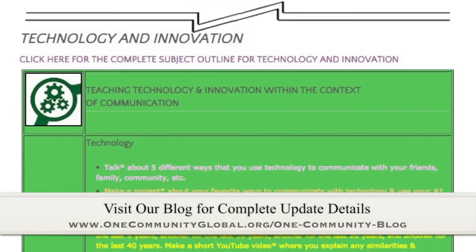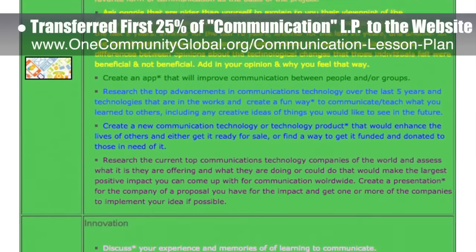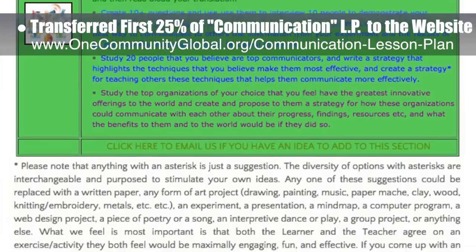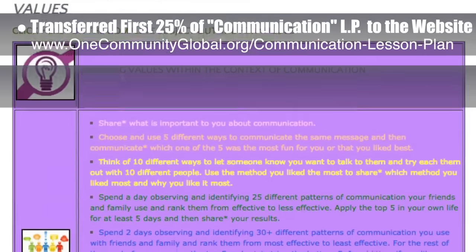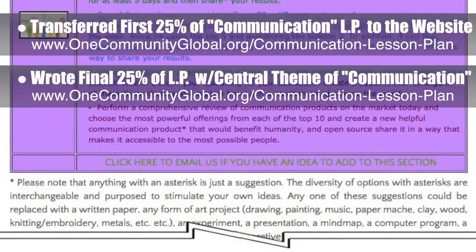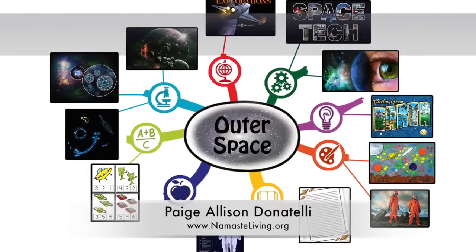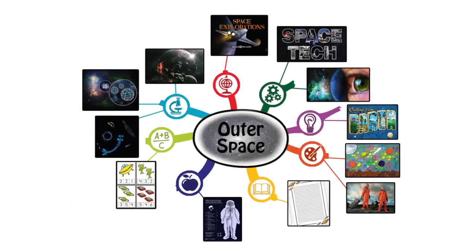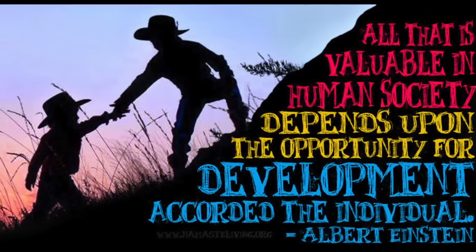This week the core team transferred the first 25 percent of the content for the communication lesson plan to the website, including all the icons and some of the written content. This lesson plan teaches all subjects to all learning levels using the central theme of communication. Behind the scenes, we wrote the final 25 percent of our lesson plan, bringing us to 100 percent complete on the writing aspect. Paige Allison Donatelli, graphic designer and owner-operator of Namaste Living in a Material World, finished the first 25 percent of the image creation for the outer space lesson plan mind map, and also helped create a new image for the movement and development lesson plan, featured this week across our social media channels.